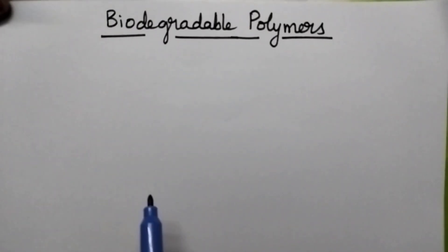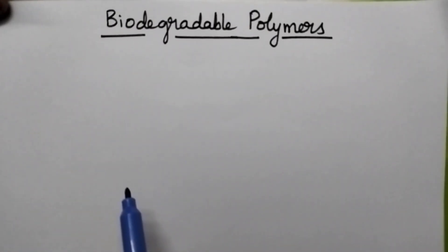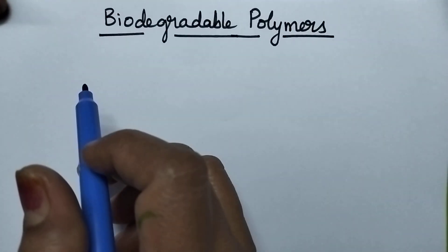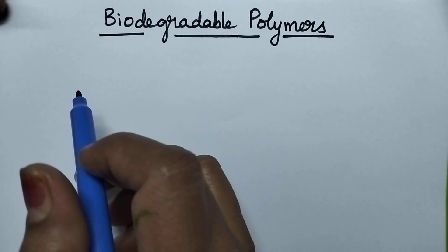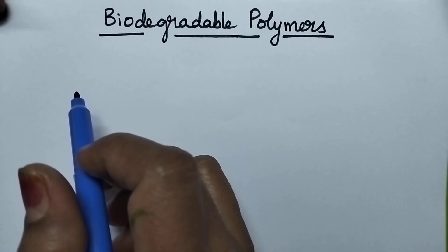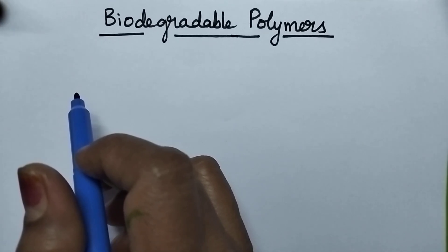Hello students, welcome back to my channel. In this video, I am going to discuss in detail about the biodegradable polymers. Biodegradable polymers can be defined as the polymers which undergo degradation by the action of naturally occurring bacteria or microorganisms.